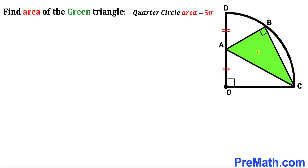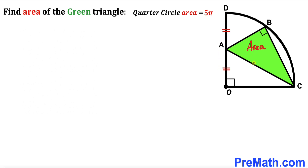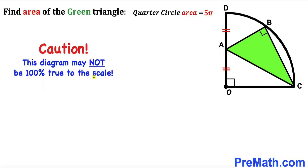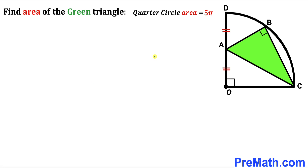Welcome to pre-math. In this video we have a green shaded right triangle ABC fully inscribed in a quarter circle with center O, as shown in the diagram, such that the area of this quarter circle is 5π square units. Moreover, segment AD equals segment AO. Our task is to calculate the area of this green shaded triangle ABC. Keep in mind that this figure may not be 100% true to scale.